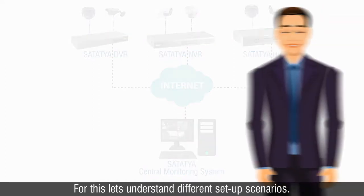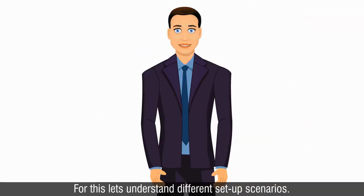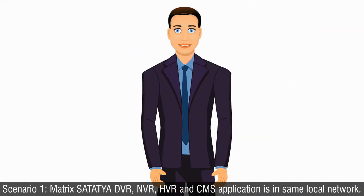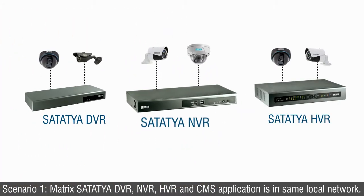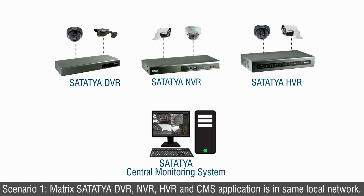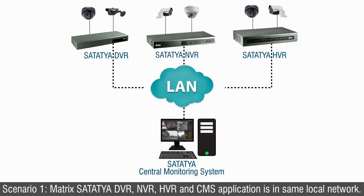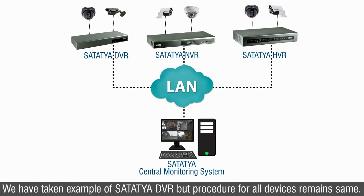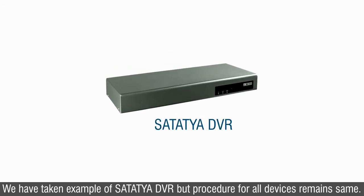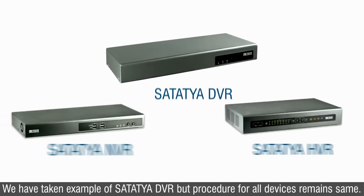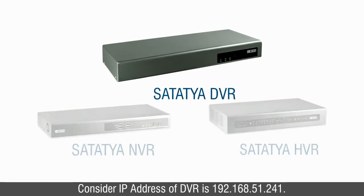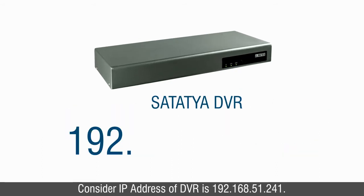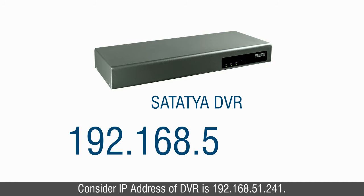Let's understand different setup scenarios. Scenario 1: Matrix Satatya DVR, NVR, HVR, and CMS application are in the same local network. We have taken the example of Satatya DVR, but the procedure for all devices remains the same. Consider the IP address of the DVR is 192.168.51.241.